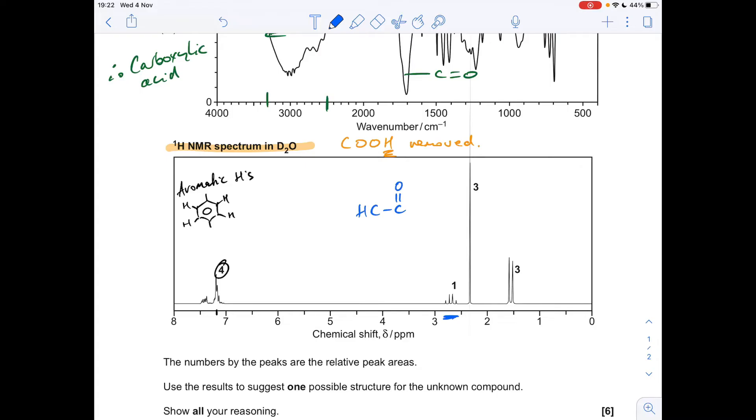Right, so the key things we need to say here is we need to say what kind of signal it is. It's a quartet. So I'll get that word in. What does a quartet mean? There are three adjacent protons. So three adjacent H's.